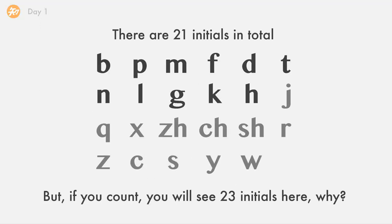Now, we are looking at the table of all initials here. Normally, we have 21 initials in total. Today, we are going to learn the first half. But, if you count, you will find 23 initials here. Why? You can take a guess first, and I will be explaining this in later classes. Okay, let's learn the initials one by one.